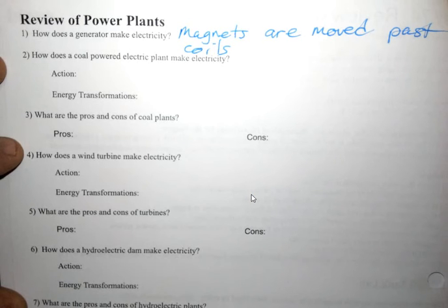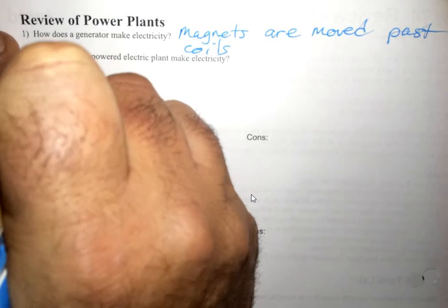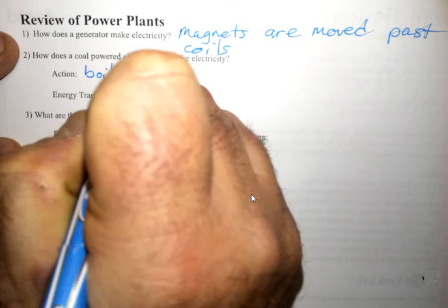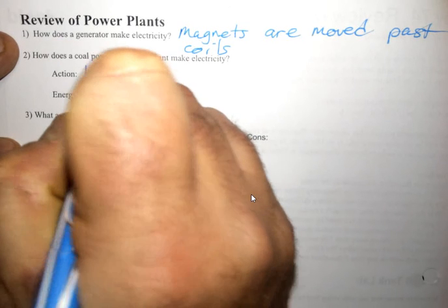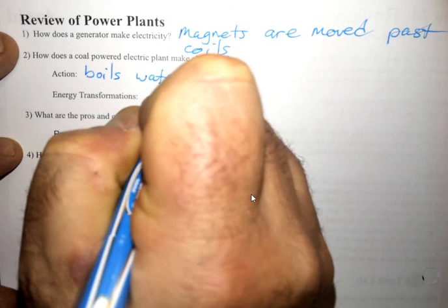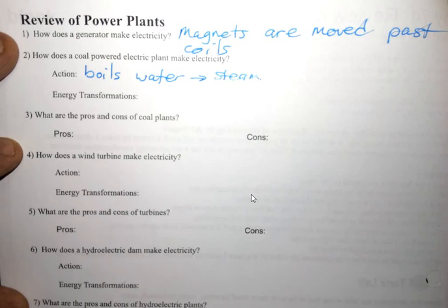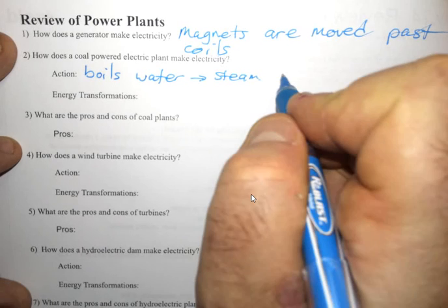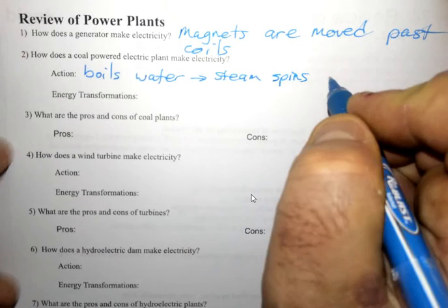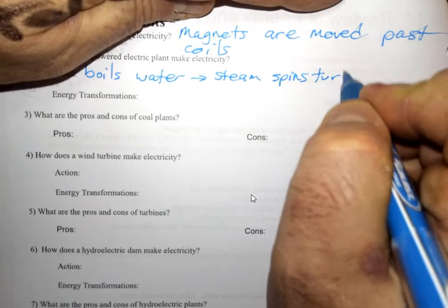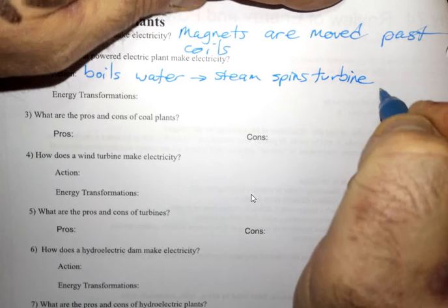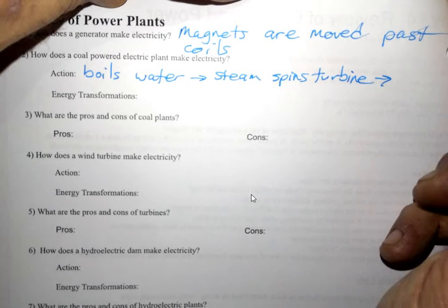Number two, how does a coal powered electric plant make electricity? Well, it's basically just a big way of boiling water. The steam goes through a fancy set of fans called a turbine and makes them spin, and that turns a generator.